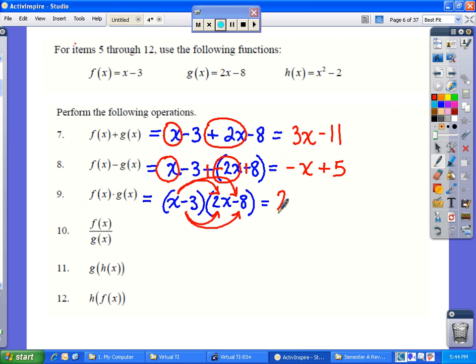x times 2x is 2x squared. x times negative 8 is negative 8x. Negative 3 times 2x is negative 6x. Negative 3 times negative 8 is positive 24. Don't forget to combine your like terms. These two terms in the middle are both linear, and you get 2x squared minus 14x plus 24.